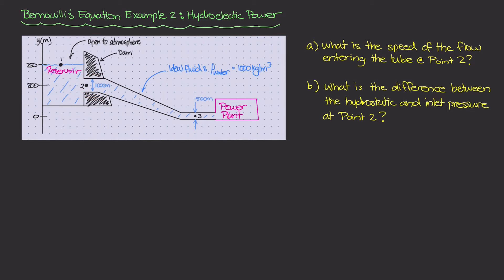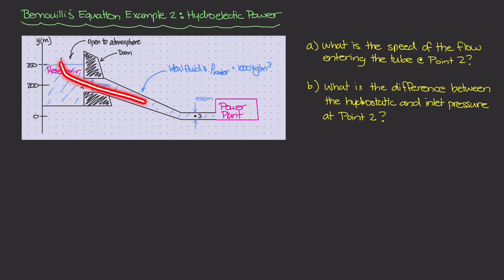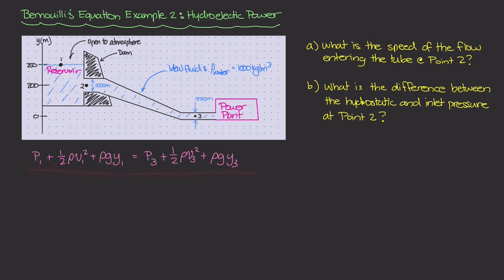The continuity equation states that A₁·v₁ = A₂·v₂ — area times velocity is conserved. In our case we'll use points two and three. To answer part a, we apply Bernoulli's equation along the streamline connecting point one to point three, find v3, and then use that to back-calculate v2. Let's write Bernoulli's equation for points one and three.